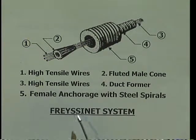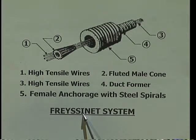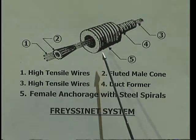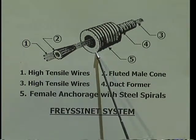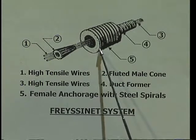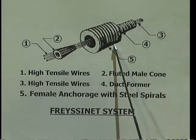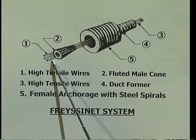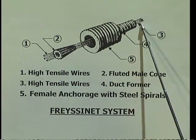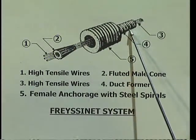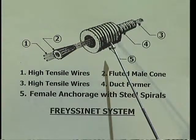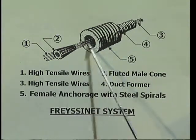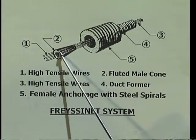The Freesinet system is the first method of post-tensioning, developed by a French engineer Freesinet, and this is the most commonly adopted system. This figure shows the arrangement of the various components of the Freesinet system. This arrangement is provided on both ends of the member to be pre-stressed. The components include high tensile wires forming the cable. The cable is placed in a cable duct former which is attached to a female anchorage, and the wires will pass through the fluted surface of the male cone.